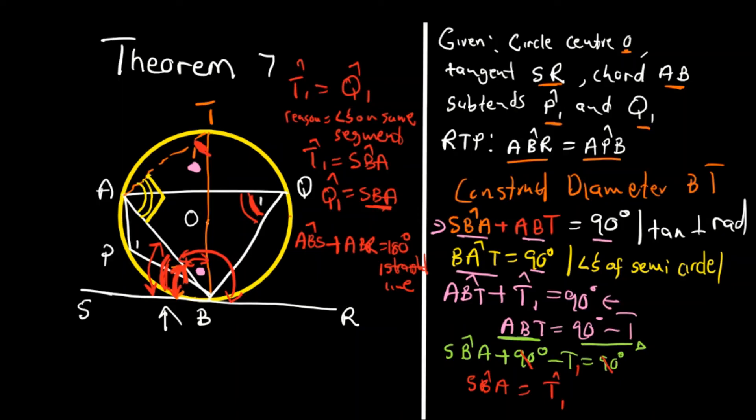So Q1, angle Q1, plus this P1 here, if you add them together, they'll give you 180 degrees. So reason is opposite angles of cyclic quad.